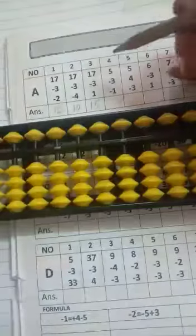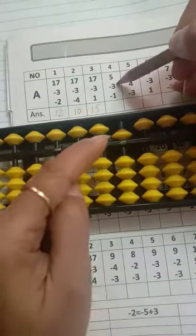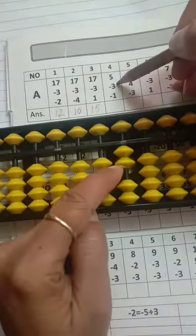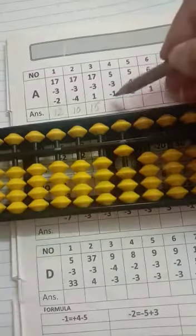Now fourth one is 5 minus 3. Minus 3 ki formula: minus 5 plus 2, then minus 1. Answer is 5.